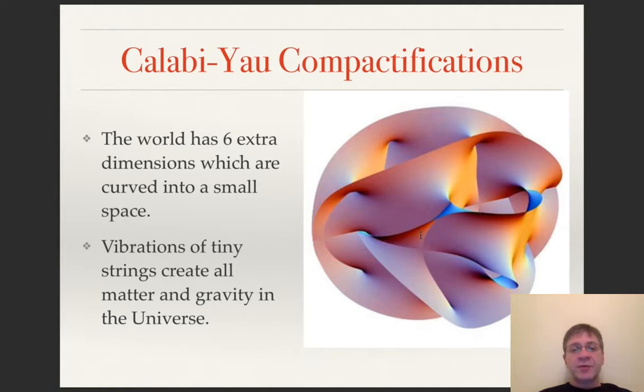Now, all these string models typically have ten dimensions for consistency reasons, but of course, we know that we live in four space-time dimensions, so the way it works is six extra dimensions are very small. They're curved into a small space called Calabi-Yau, and we can't access this small space. And vibrations of tiny strings create all matter and gravity in the universe.